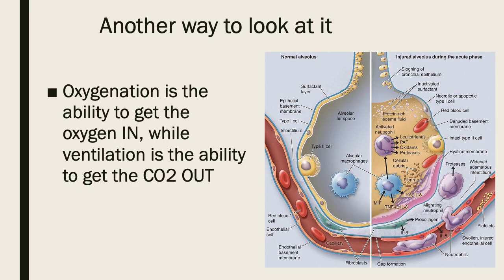Oxygenation is the ability to get oxygen in, while ventilation is the ability to get CO2 out. As you can see in this picture, it's very hard to get oxygen in on the right-hand side when there's all that junk — that's what alveoli look like with something like ARDS, or acute respiratory distress syndrome. There's just too much material that oxygen can't get past, causing the oxygenation problem. It's not that they're not getting enough oxygen; it's that oxygen can't get past all that debris.